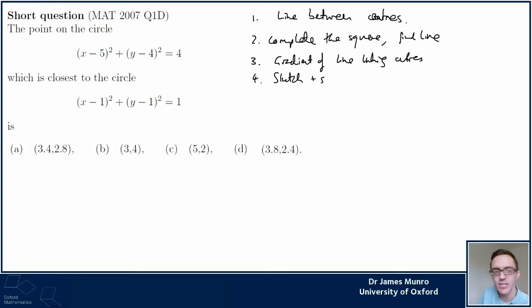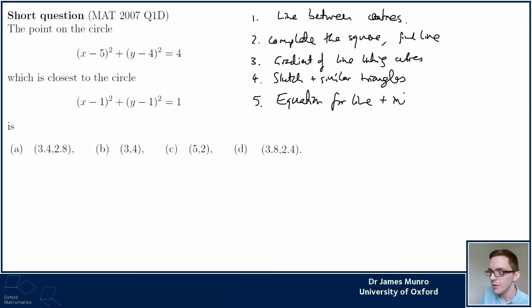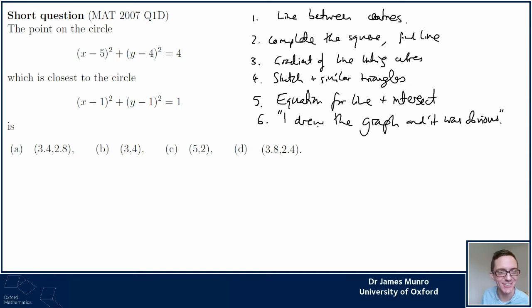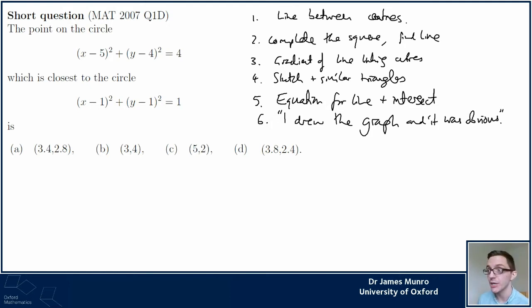Method five: find an equation for the line and intersect with the first circle. And there's a direct quote from chat: 'I drew the graph and it was obvious.' That's solid gold from chat - I love it. I think all of these methods work.